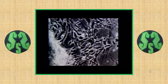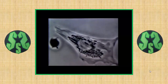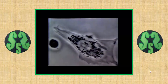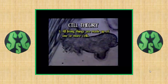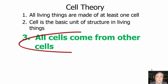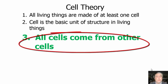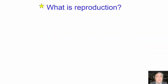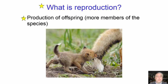Life, Virchow said, is an unbroken chain of cells extending back to the first living cell. The three points of cell theory are: one, all living things are made up of one or more cells; two, cells are the basic units of structure and function in living things; and three, cells come only from other living cells. That key point — all cells come from other cells — is what we focus on today.